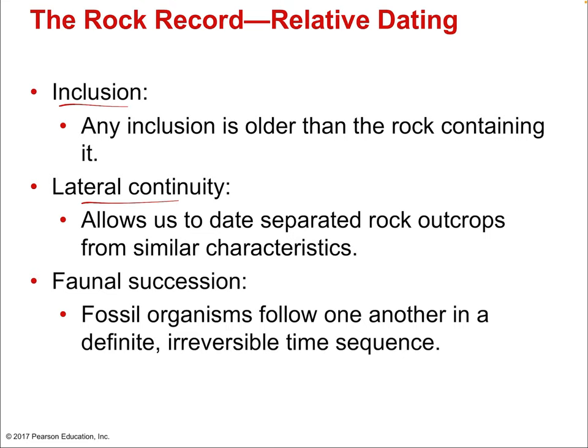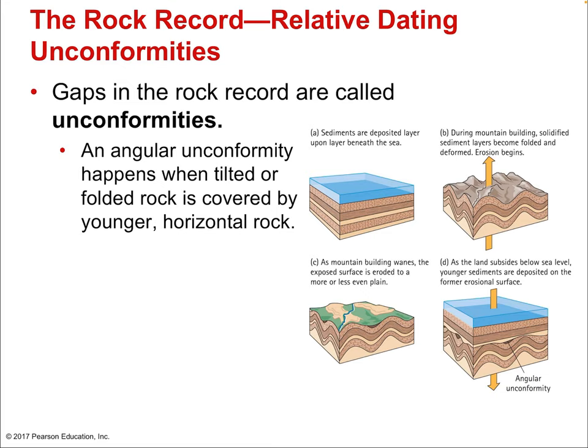There's also faunal succession, using the fossil record to help understand the rock record. Fossil organisms follow one another in a definite irreversible time sequence — we know more complex mobile animals evolved from simple sponges, which evolved from more primordial organisms. So if we find certain fossils, we know those rocks must be older. There are certainly gaps in the rock record called unconformities, which science constantly works to fill in. Angular unconformity happens when tilted or folded rock is covered by younger horizontal rock — cataclysmic events shift things around, and then layering continues on top of the remnants.